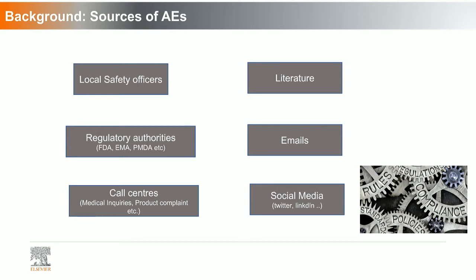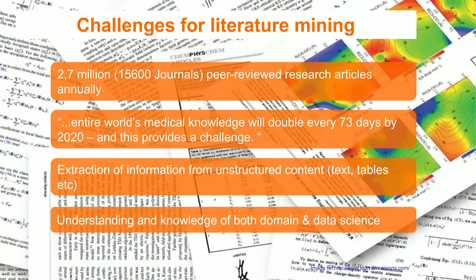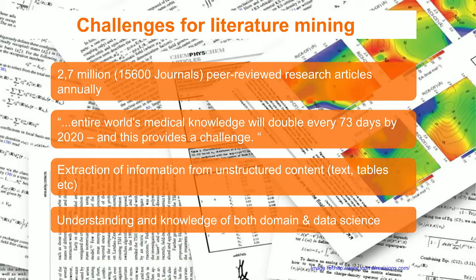In this talk, I'm going to focus on literature and FDA drug labels for extraction of adverse reactions. Extracting this information from literature is challenging because around 2.7 million peer-reviewed research articles are published annually. According to this rate, the entire world's medical knowledge will double every 73 days by 2020. This is a huge amount of data that needs to be processed, which is difficult to do manually.